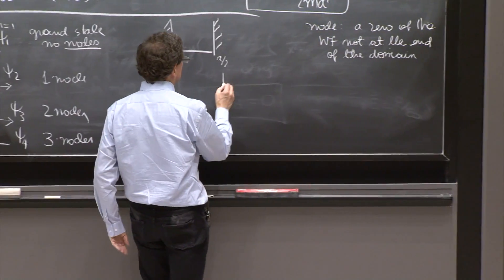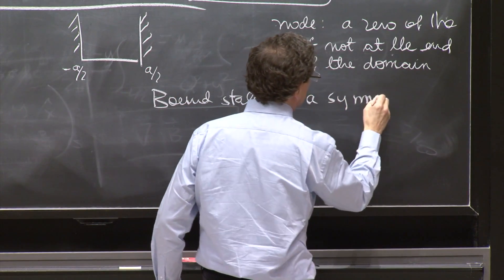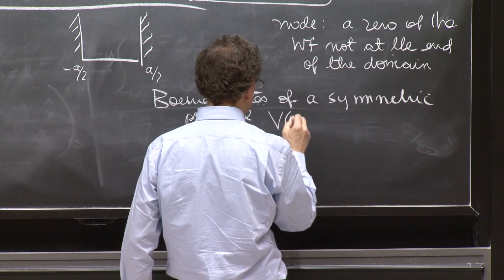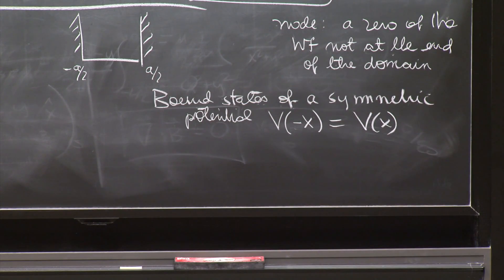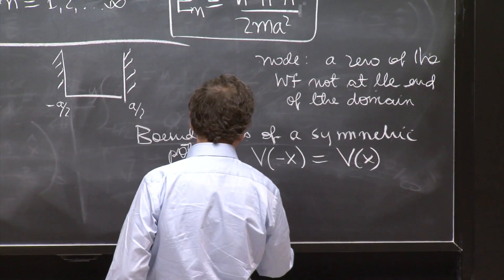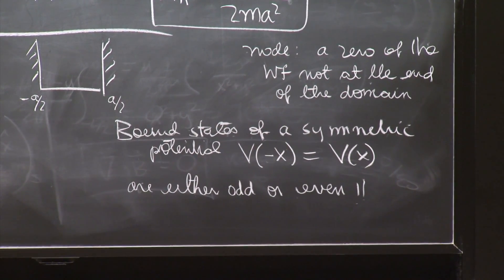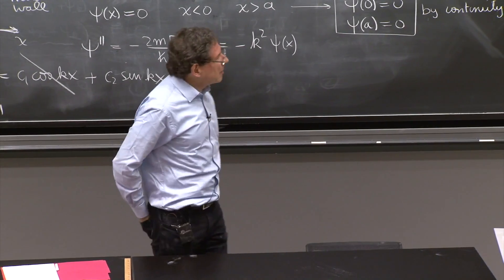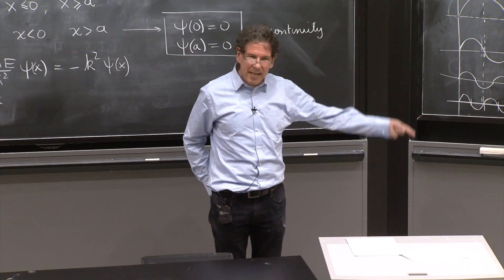So this is also a true fact. In fact, if you have bound states of a symmetric potential, and we'll prove this one on Wednesday, a symmetric potential is a potential for which v of minus x is v of x. Bound states of a symmetric potential are either odd or even. This is not a completely simple thing to prove. We will prove it. But you need, in fact, another result that will be in homework, not this week's homework, but next week's homework.